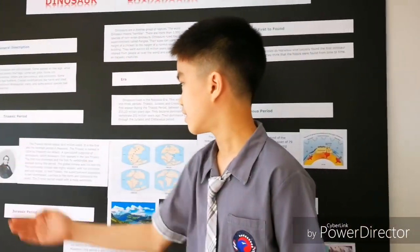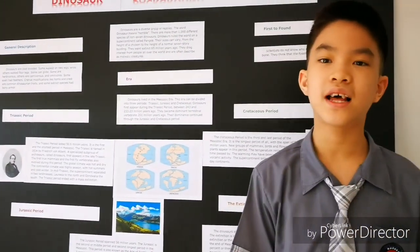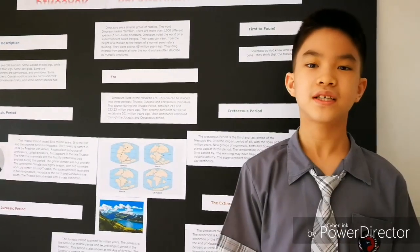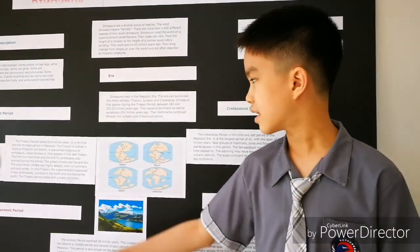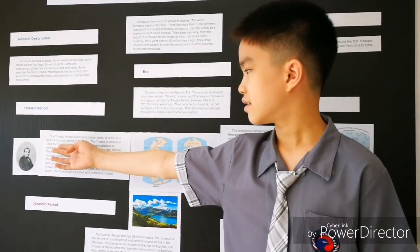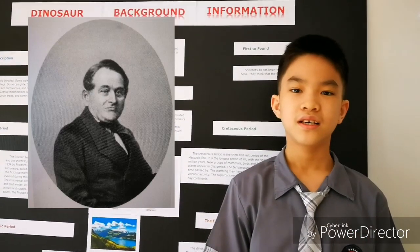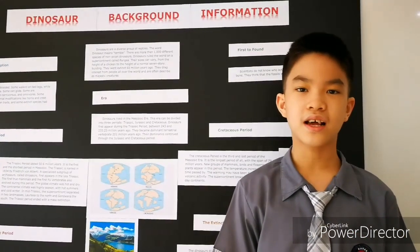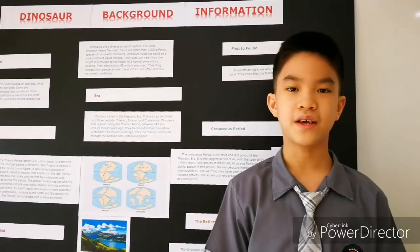The Triassic period lasted 15.6 million years. It is named by the scientist Frederick von Alberti. In this period, dinosaurs and other animals appeared.